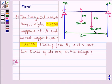of weight 33,600 Newton, starting from A, is at a point two-thirds of the way on the bridge. Let's start with the solution.